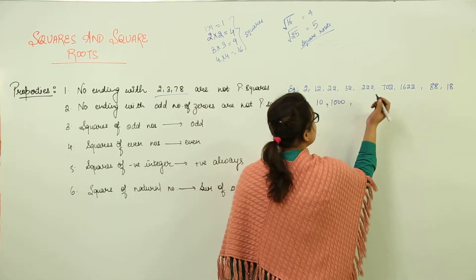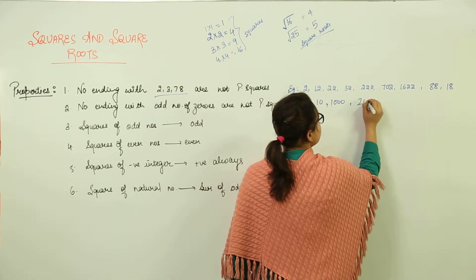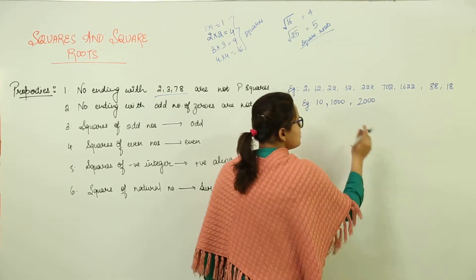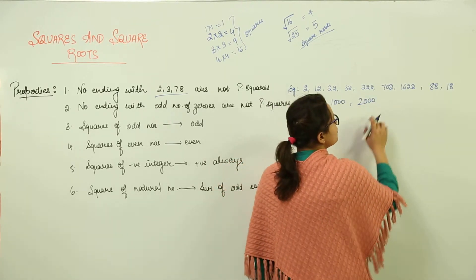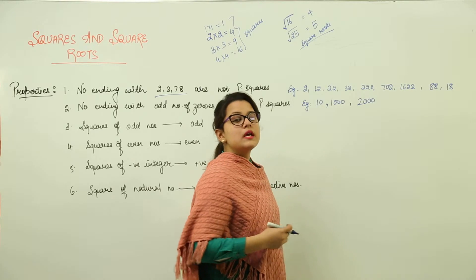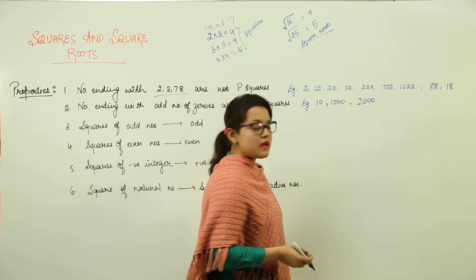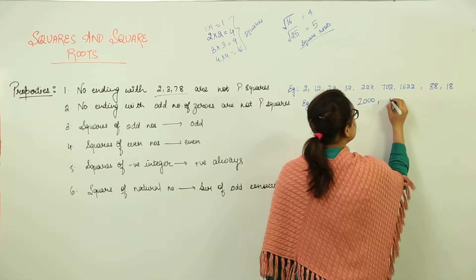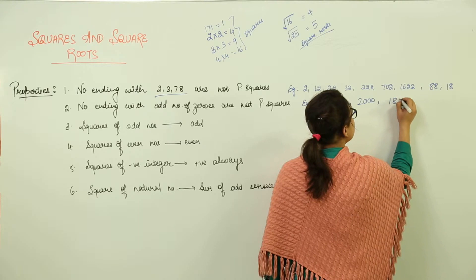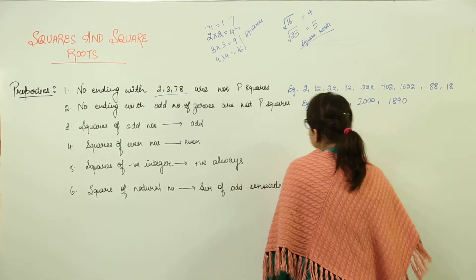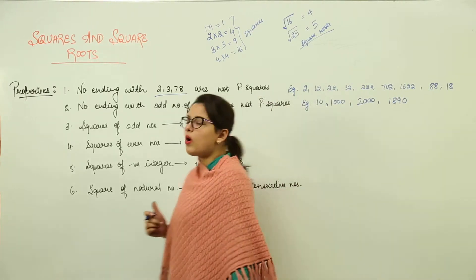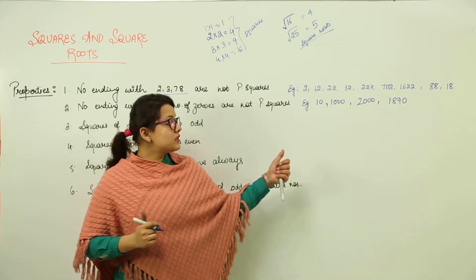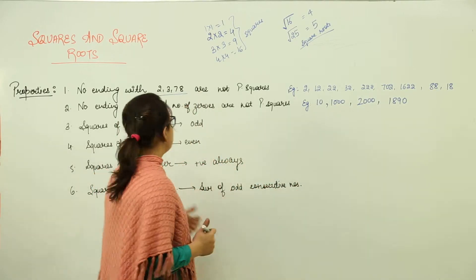Similarly, you can check any number such as 200 or 2000 directly. Another example is 1890 — it has an odd number of zeros, so it is also not a perfect square.